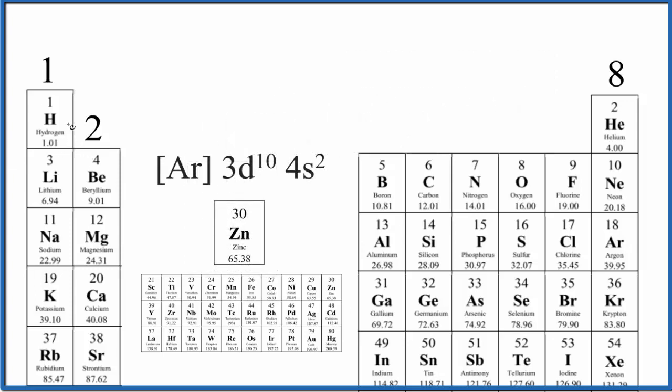So typically when we're looking for the number of valence electrons, we look at the group number. Group number 1, all of these have one valence electron. Group 2, they have 2. Then we skip the transition metals and so on. So the transition metals like zinc, they're a little bit more complicated.